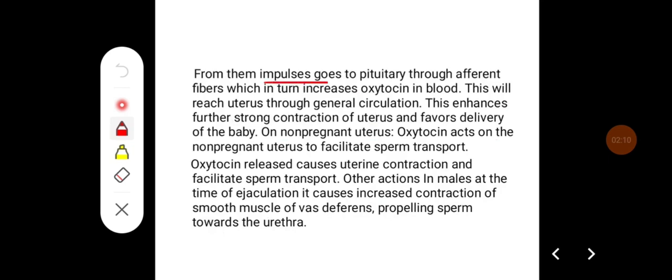From these receptors, impulses go to the pituitary through afferent fibers, which increases oxytocin in the blood. This reaches the uterus through general circulation, enhancing further strong contraction of the uterus and favoring delivery of the baby.